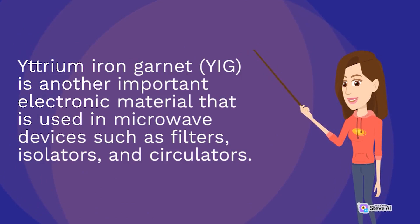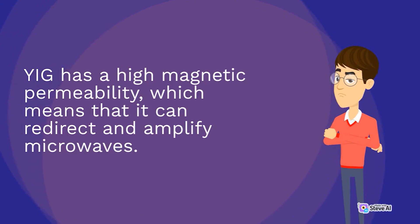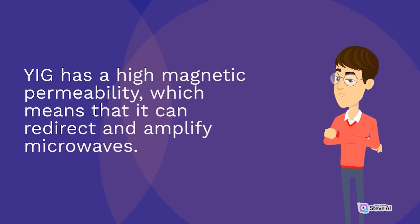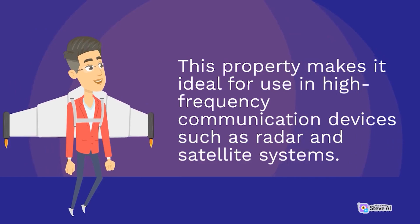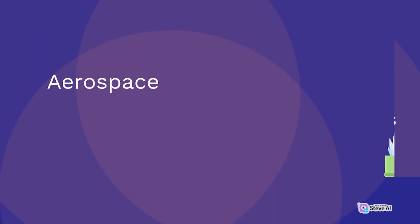Yttrium iron garnet (YIG) is another important electronic material that is used in microwave devices such as filters, isolators, and circulators. YIG has a high magnetic permeability, which means that it can redirect and amplify microwaves. This property makes it ideal for use in high-frequency communication devices such as radar and satellite systems.